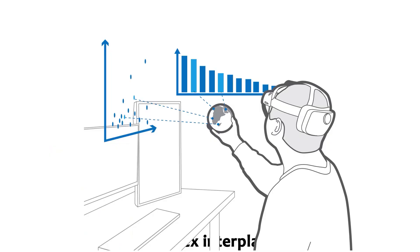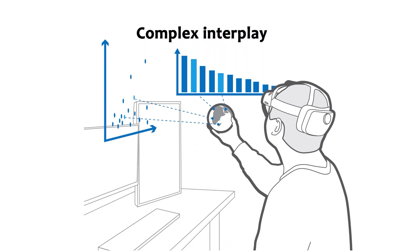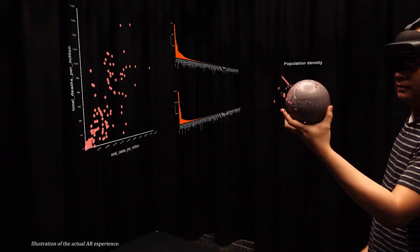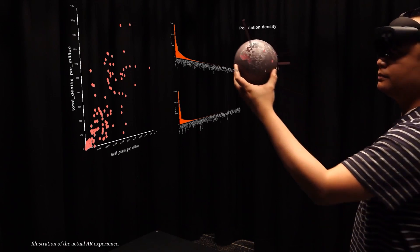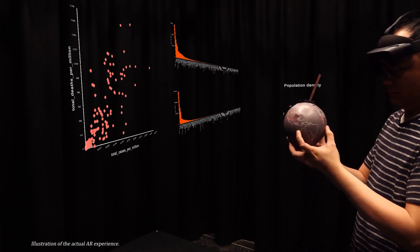Here we present the last category. In the complex interplay category, information visualization is shared between a tangible globe and virtual data visualizations. Complex arrangements of multiple coordinated views can be created by combining data visualization placed on the surface of a tangible globe with data visualization placed in the surrounding space. To demonstrate this category, we visually analyze COVID-19 data. The user is holding an augmented globe showing population density, and virtual charts such as scatter plots and bar charts are placed in the surrounding space. The augmented globe provides geospatial context, and the charts communicate information not visible on the augmented globe. When the user brings the globe to the proximity of the charts, visual links appear to connect these two visualizations.